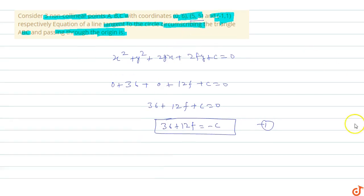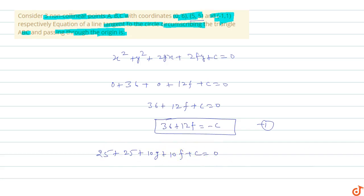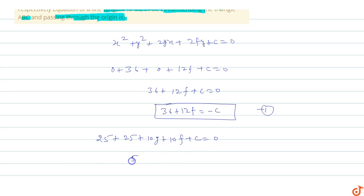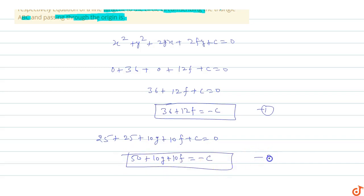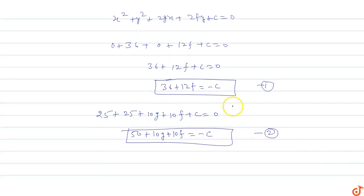Substituting point B(5,5): 25 + 25 + 10g + 10f + c = 0, so 50 + 10g + 10f + c = 0, giving us 50 + 10g + 10f = -c. This is equation two.